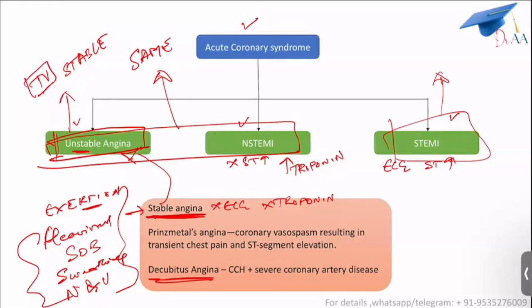Decubitus angina is seen in people who have severe heart failure because of severe coronary artery disease. Whenever they lie down flat, they tend to have chest discomfort — that is known as decubitus angina. Prinzmetal angina is nothing but coronary vasospasm resulting in transient chest pain and ST-segment elevations. There is no occlusion in the coronary artery — it's just a spasm. The artery constricts and goes into spasm, causing chest symptoms and ST-segment elevation on ECG. But within a few minutes, without any intervention, these symptoms disappear.